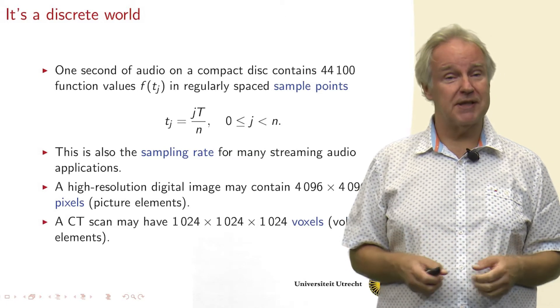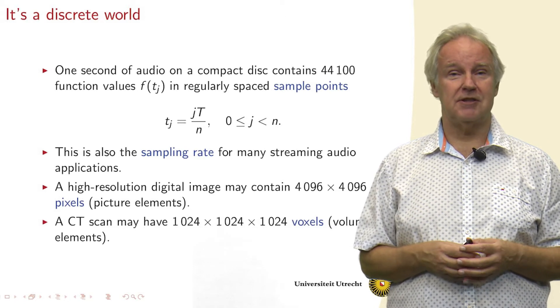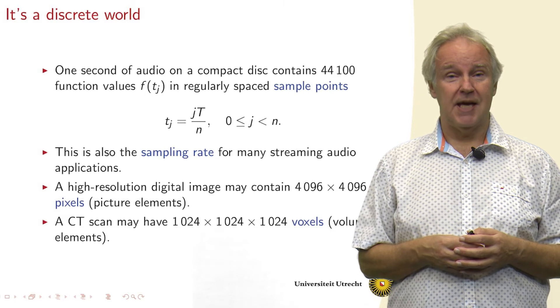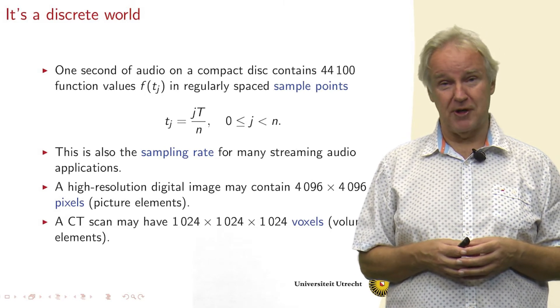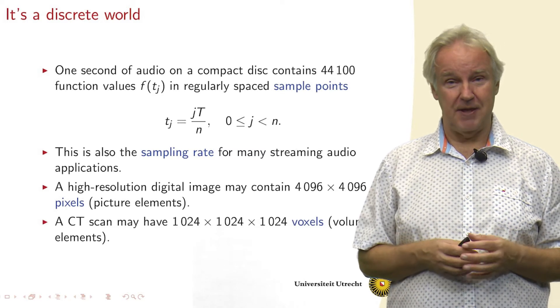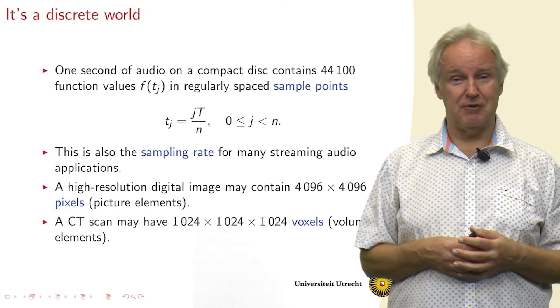And for example, on a compact disc, we have 44,100 sample points per second. And this is also what we get in a lot of streaming audio applications. So this is a sampling interval which suits the frequency range of the human ear.